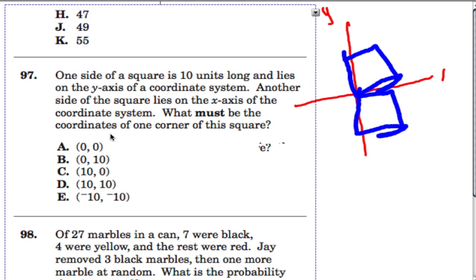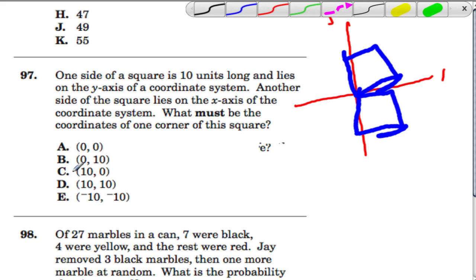Our number 97, oops. Part 97 is A. The only point that the square must have is the origin.